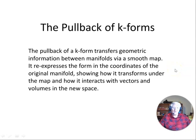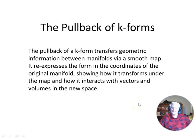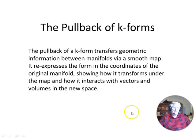Hello everyone, and a big welcome to everyone. I hope you're all well and ready to have a look at the pullback of K-forms. The pullback of a K-form transfers geometric information between manifolds via a smooth map. It re-expresses the form in the coordinates of the original manifold, showing how it transforms under the map and how it interacts with vectors and volumes in the new space.